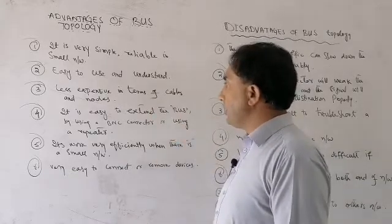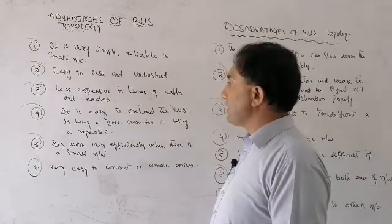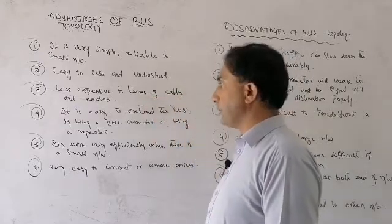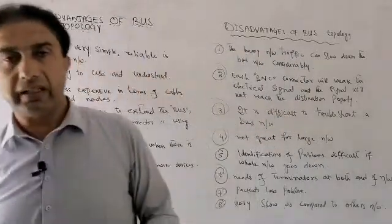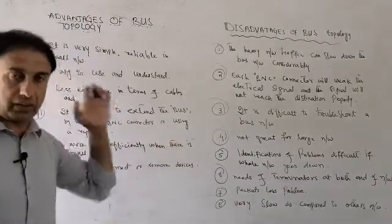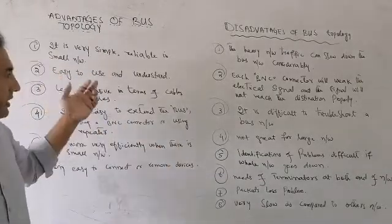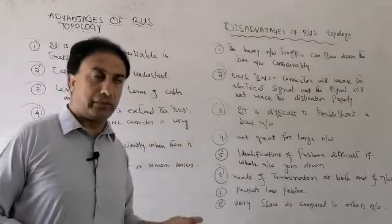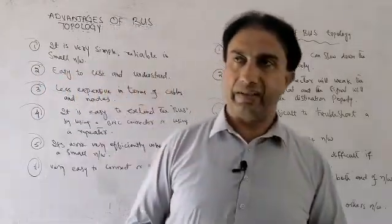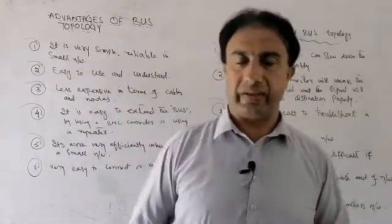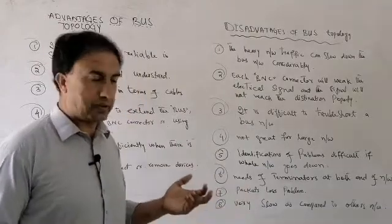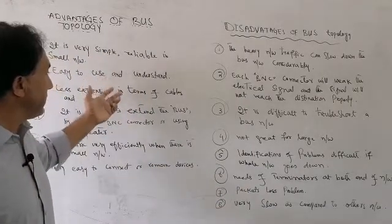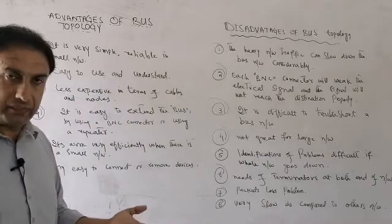The third advantage is that it is less expensive in terms of cables and nodes. This is a very low-cost network because we need some fuse cables and a small number of systems, which is less expensive compared to other networks — both in terms of cables and computers.